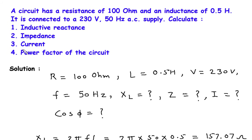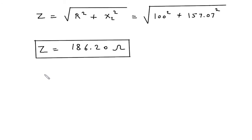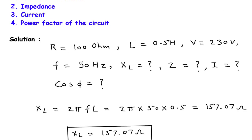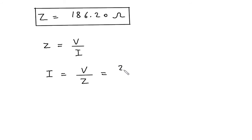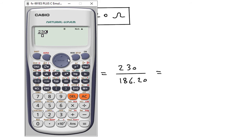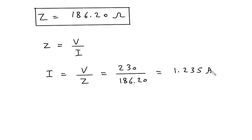Next we have to find current. Using Ohm's law for AC circuit, Z is equal to V by I, so I is equal to V by Z. The value of voltage is 230 volt and impedance Z is 186.20. So I is equal to 230 divided by 186.20, which gives 1.235 ampere. This is the value of current.